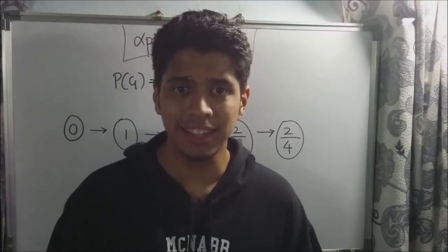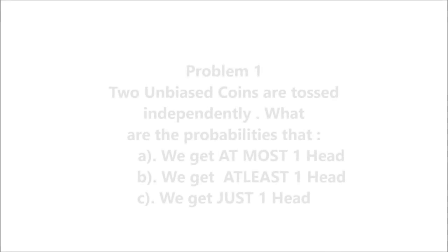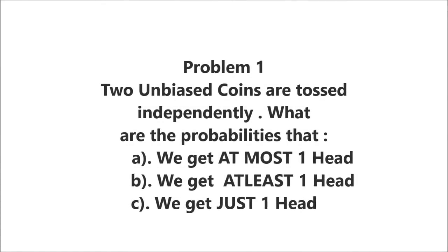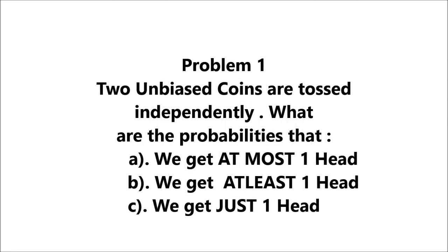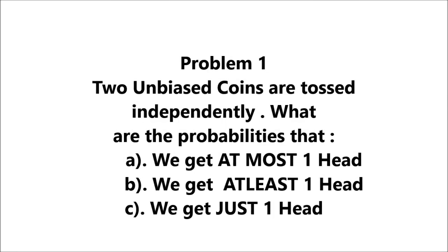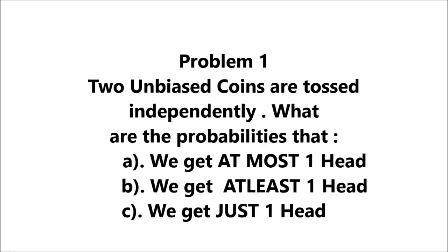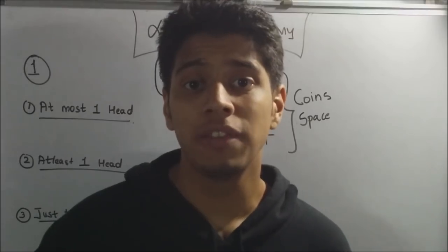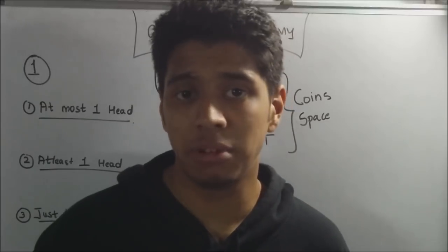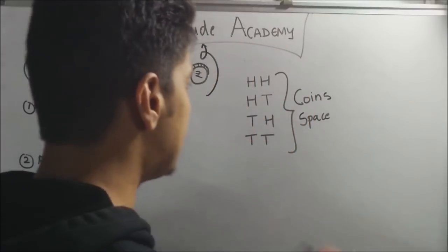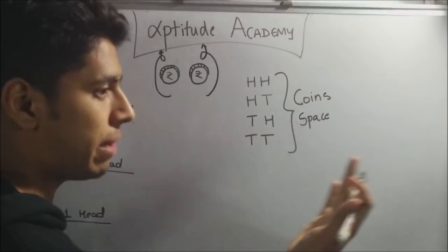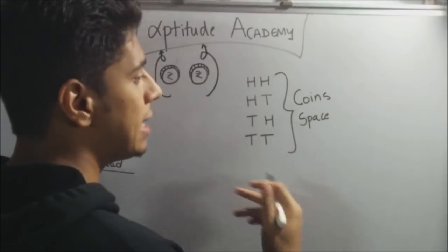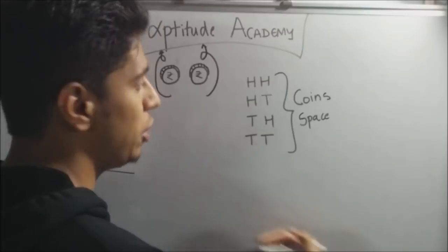Now that you know the basics of probability, let's solve a simple sum. Problem one. Two unbiased coins are tossed independently. What are the probabilities that A, we get at most one head, B, we get at least one head, and C, we get just one head? Now when you're solving problems in probability, you need to read the statement very carefully. In this example, we've said that two coins are flipped independently. Now, your space of results, that is your coin space, is the number of cases that you could have when you flip these two coins.